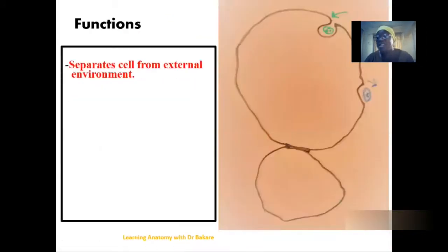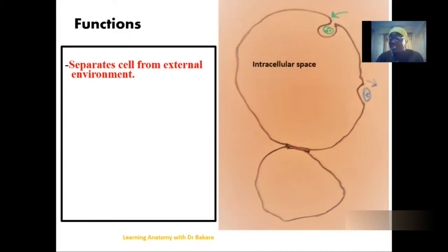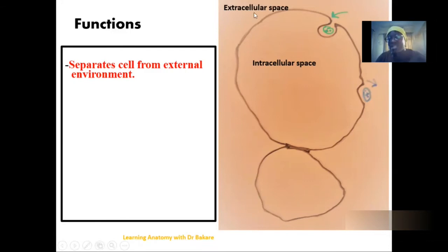The functions of the cell membrane include that they form a border between the intracellular compartment and the extracellular compartment. The intracellular space is the region that is enclosed within the cell, while the extracellular compartment is the region seen outside the cell. So it tends to separate these two compartments and create a demarcation between them.